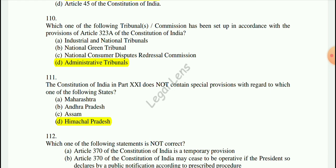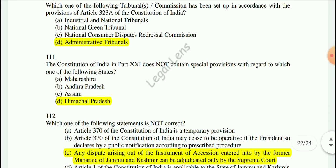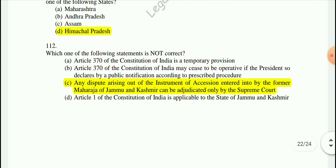Question 111: Part 21 does not contain a special provision with respect to Maharashtra — it is related to Article 370. The wrong statement is option C: any dispute arising out of the instrument of accession entered into by the former Maharaja of Jammu and Kashmir can be adjudicated only by the Supreme Court — that is wrong.